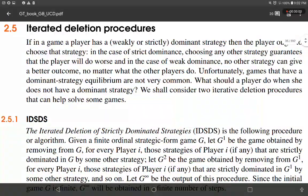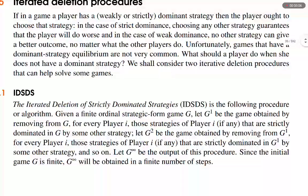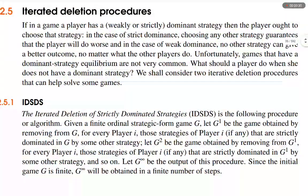2.5 Iterated Deletion Procedures. If in a game a player has a weakly or strictly dominant strategy, then the player ought to choose that strategy. In the case of strict dominance, choosing any other strategy guarantees that the player will do worse. In the case of weak dominance, no other strategy can give a better outcome, no matter what the other players do. Unfortunately, games that have a dominant strategy equilibrium are not very common. What should a player do when she does not have a dominant strategy? We shall consider two iterative deletion procedures that can help solve some games.